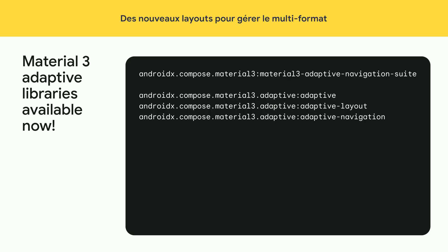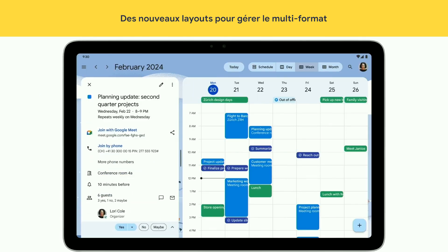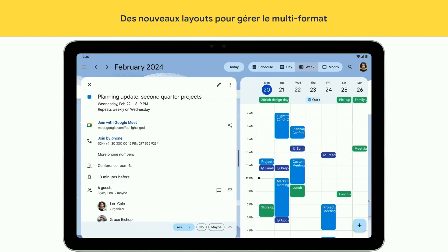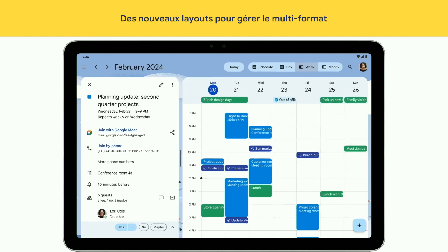We're excited to announce a new set of Compose APIs for building adaptive layouts with material guidance. We have three layouts that implement common adaptive scenarios — we call this pane expansion. In Android 15, this feature is being added to activity embedding, and this support will also come to Material 3 Adaptive.